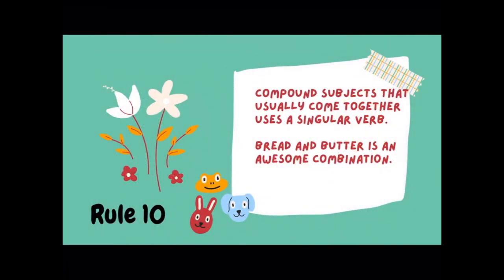Compound subjects that usually come together use a singular verb. Some examples usually refer to food that we often buy together, such as bread and butter is an awesome combination.